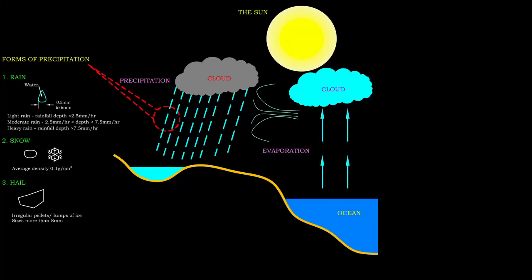Precipitation includes all forms of water that are being transported from the atmosphere to the earth. There are several common forms for precipitation.